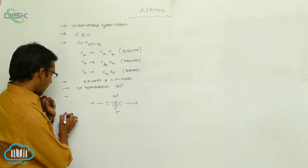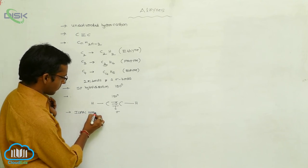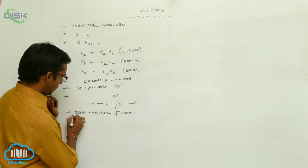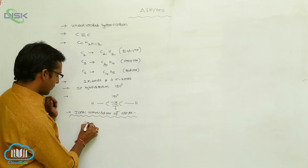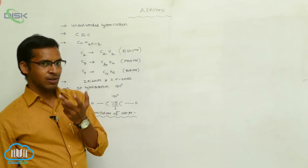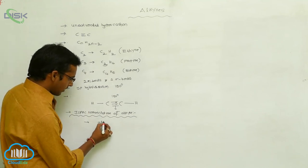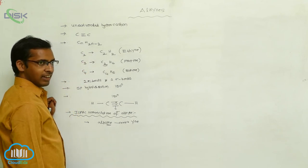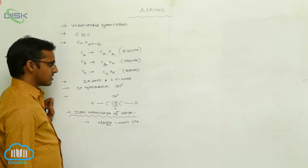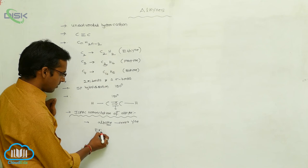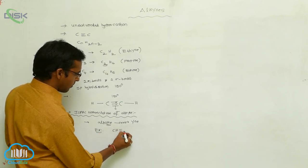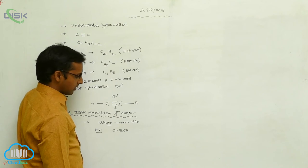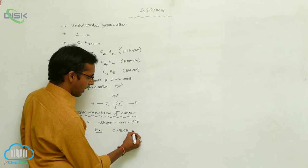Now, the IUPAC nomenclature of alkyne. In alkyne, the alkynes are named similar to alkanes, where the suffix 'ane' is replaced with 'yne' — meaning the suffix for triple bond is 'yne'. For example, CH triple bond CH has two carbons, so the root word is 'eth', and the suffix is 'yne', giving ethyne.